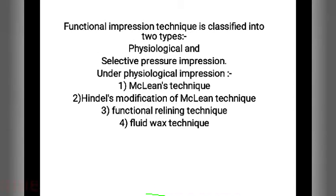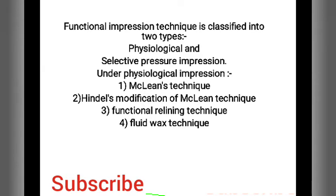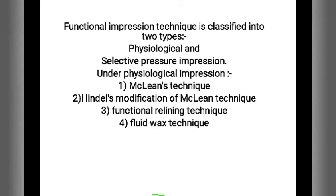Functional impression technique is classified into two types: physiological and selective pressure impression. Under physiological impression there are Maclean's technique, handle modification of Maclean's technique, functional relining technique, and fluid wax technique. In this video we are covering Maclean's technique and the handle modification of Maclean's technique.